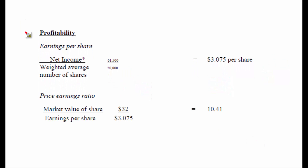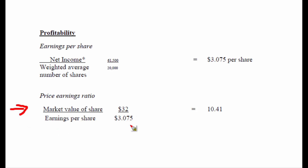What a lot of investors like to do with this information is first find the price of the share right now on the market, which I have disclosed at $32 — what the market thinks the share is worth — and put this over the earnings per share of $3.075 to come up with what we call the price earnings ratio.